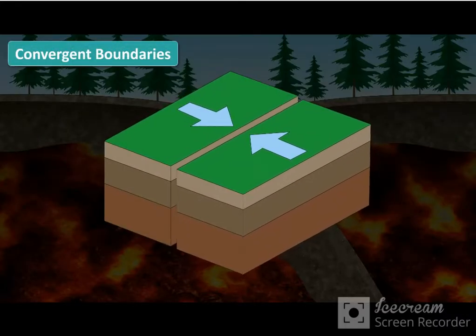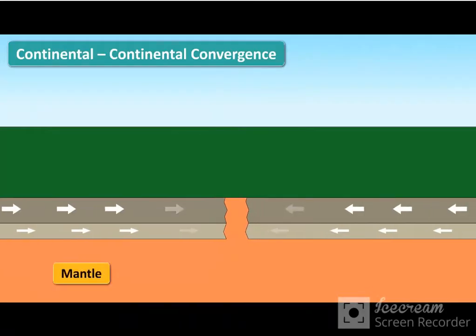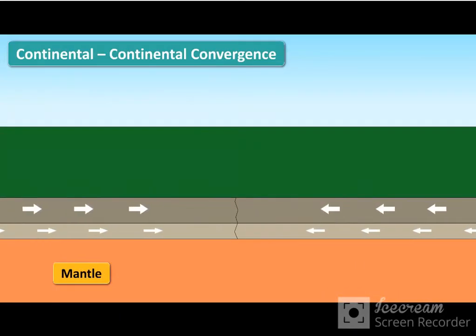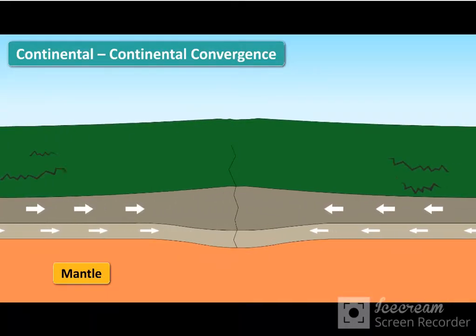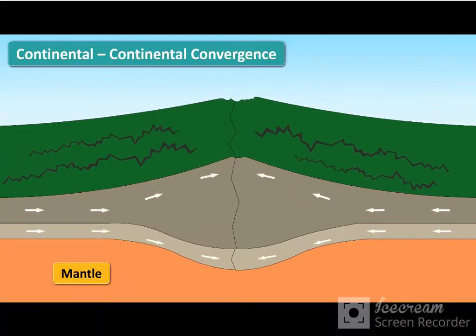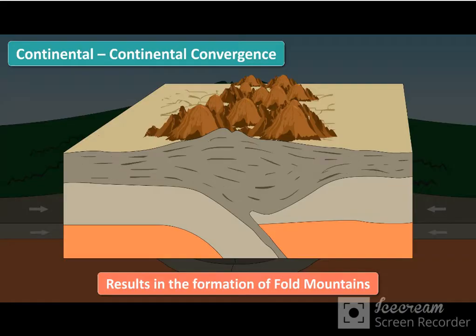At convergent boundaries, plates collide with each other. When two continental plates collide, neither plate sinks. Instead, massive pressure builds up at the point of collision. The rocks crumple and are thrown up in a series of massive folds, forming a range of towering fold mountains.